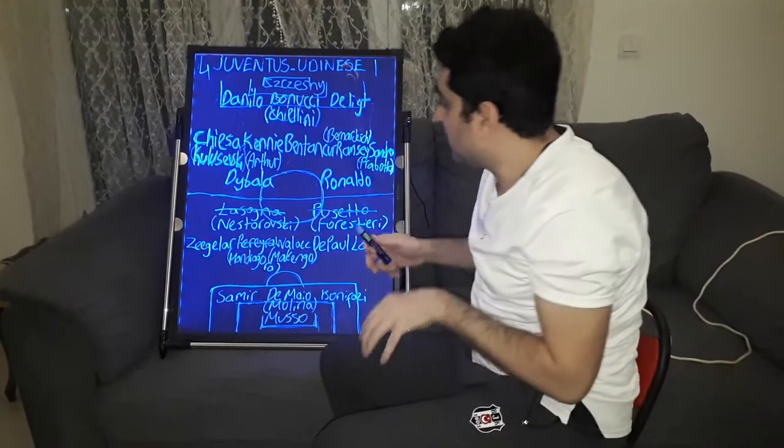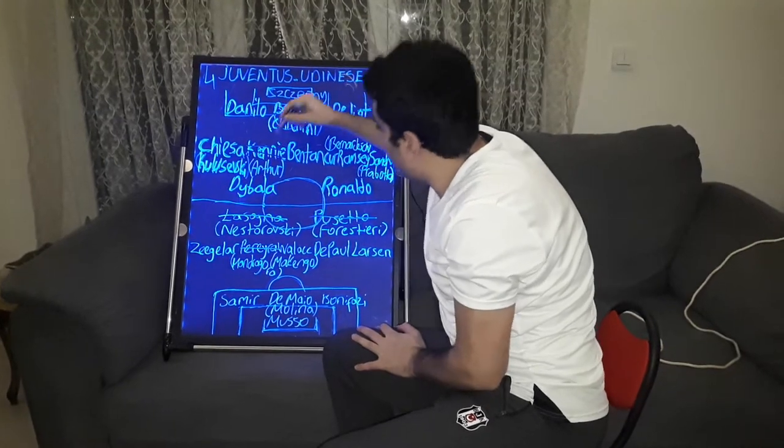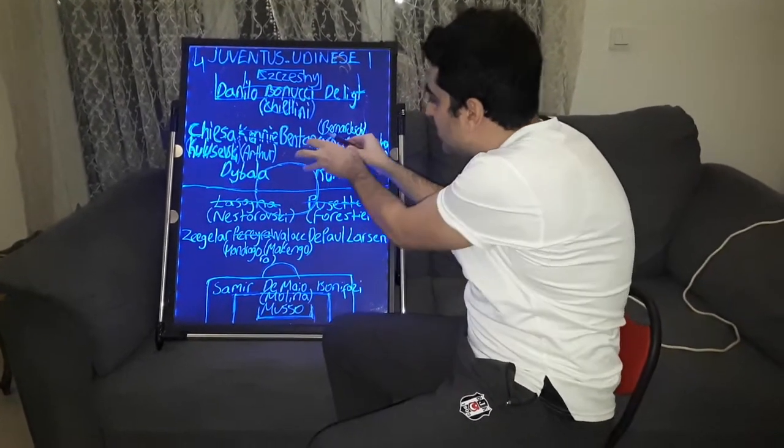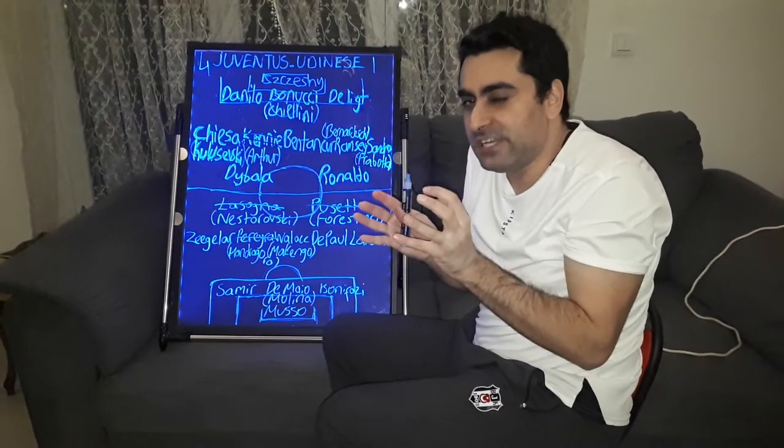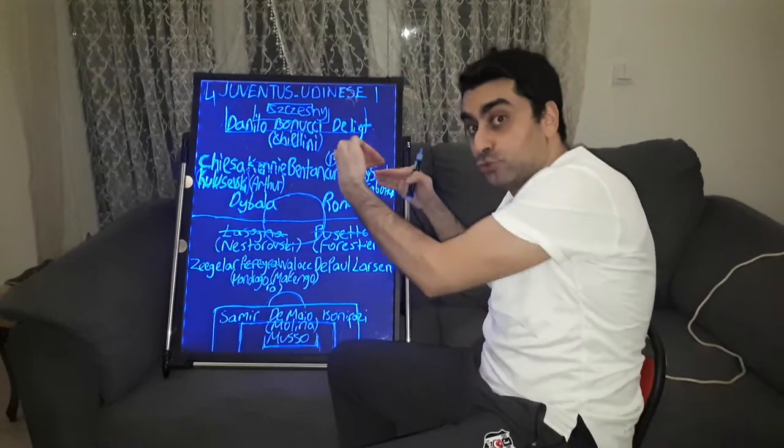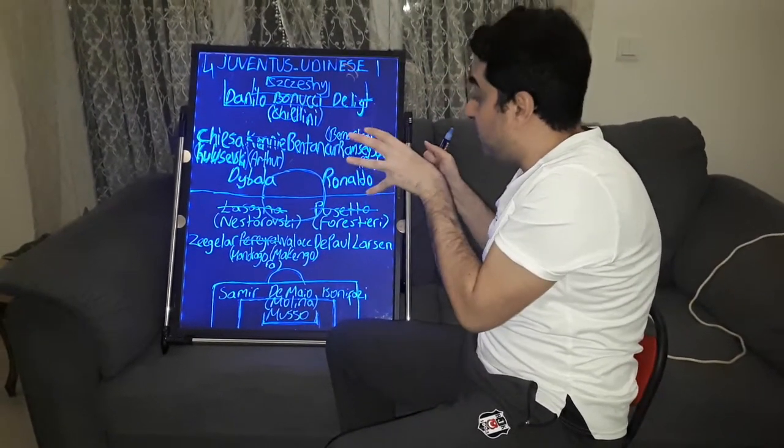In Juventus, Andrea Pirlo made first substitution: Weston McKinney out, Arthur in on the midfield. After this substitution, Bentancur started to play a little bit more offensively and Arthur played close to the defense line. Arthur played more defensively.